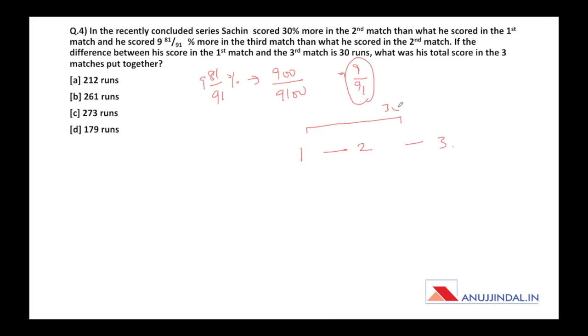If the difference between third and first is 30 runs, we have an absolute number now. The third and first difference is 30 runs. Through this we will make our calculations. What was his total score in the three matches? We simplified 9 by 91. When we simplify such fractions, whatever number we assume has to be a multiple of this fraction. So we take multiple of 91k or 91x. So 91x is the score in second match.